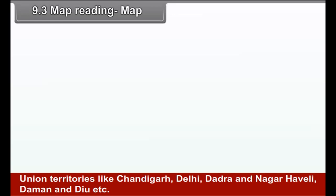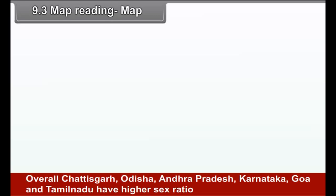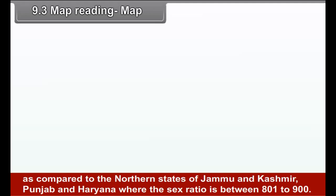According to this map, Kerala has the highest sex ratio of 1084, whereas Haryana state has the lowest sex ratio of 877. Union territories like Chandigarh, Delhi, Dadra, Nagar Haveli, Daman Diu, etc. have a very low sex ratio except Puducherry which has 1038 sex ratio.